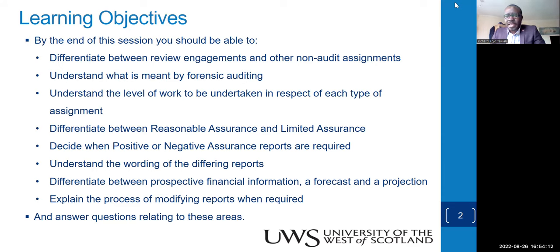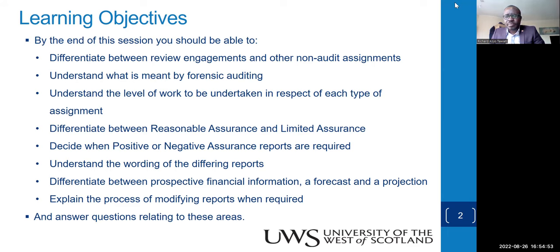We're looking at the differences between review engagement, other non-audit assignments, and forensic auditing. When you hear the word forensic, it relates to law, legal matters, something which has to do with criminal activity. We then understand the level of work to be undertaken in each type of assignment. They may not be audits, but they still require the same skills and technical know-how which an auditor would use. We may have heard reasonable assurance, which normally runs through the concept of auditing, but what about limited assurance? We'll look at that. Sometimes we want to issue a positive or negative assurance report. We'll also differentiate between prospective financial information, a forecast, and a projection.